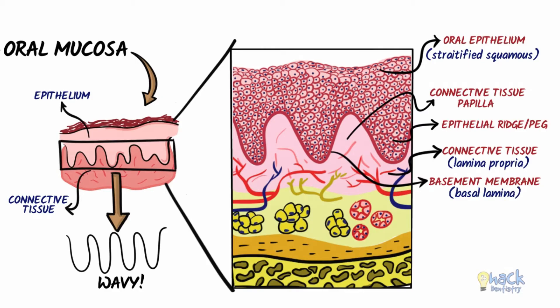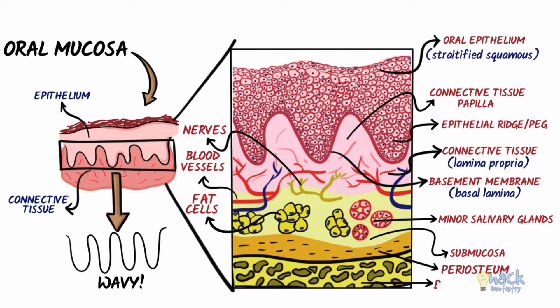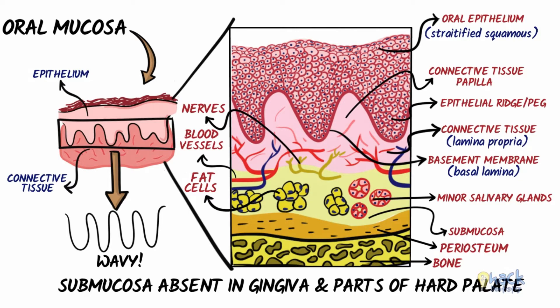Below the lamina propria is another layer of connective tissue called submucosa, consisting of minor salivary glands, fatty tissue, major blood vessels, and nerves. The submucosa attaches the overlying tissues to the underlying bone or muscle. However, it is absent in the gingiva or parts of the hard palate where the oral mucosa is directly attached to the underlying bone, giving it a firm consistency.